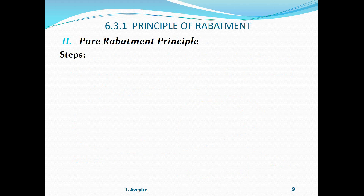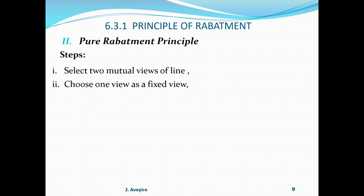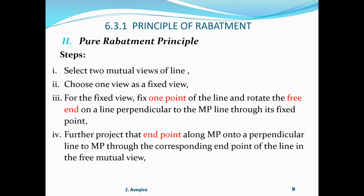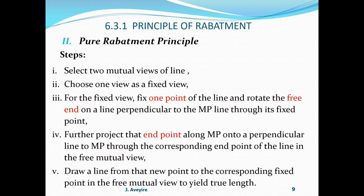Pure rabatment principle — steps involved. One: select two mutual views of a line. Two: choose one view as a fixed view. For the fixed view, fix one point of the line and rotate the free end onto a perpendicular line to the mutual projector (MP) through its fixed point. Further, project that endpoint along MP onto a perpendicular to the mutual projector through the corresponding endpoint of the line in the free mutual view. Draw a line from the new point to the corresponding fixed point in the free mutual view to yield the true length.